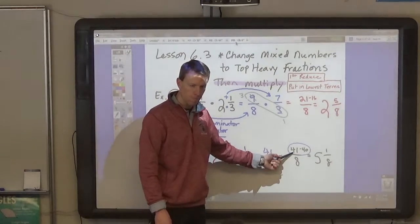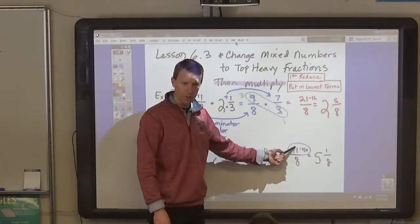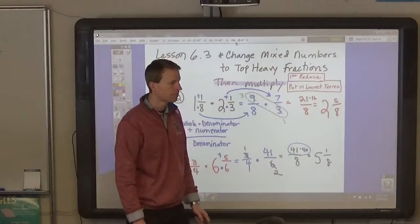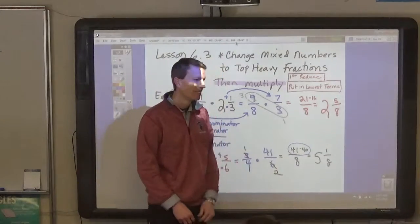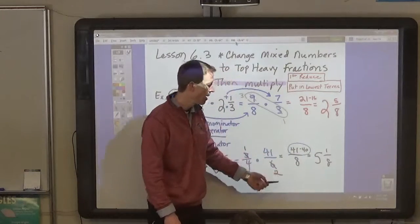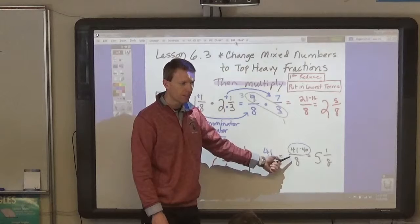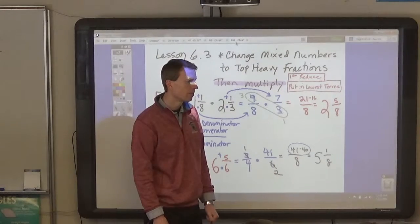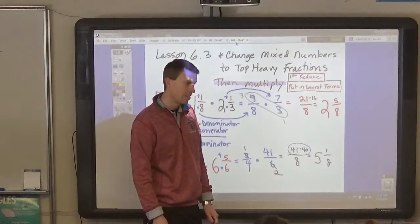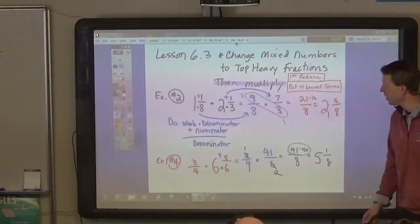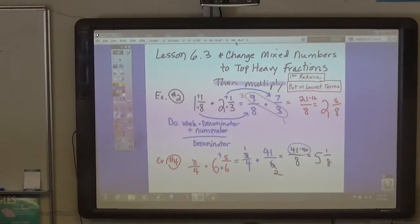How many times does eight go into forty-one? Bryce? Five times. That's the whole number. What's the remainder? One. Because forty-one minus forty is one, and so forty-one eighths is really what? No, it's a mixed number. It's right there. Five and one eighth. It's really five and one eighth. You see how you get that, everybody? Everybody see how you get that? Yeah. Okay. Good. So that's how you have to remember, you have to convert mixed numbers to top-heavy fractions before you can multiply them.